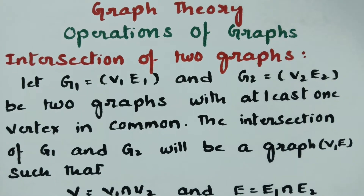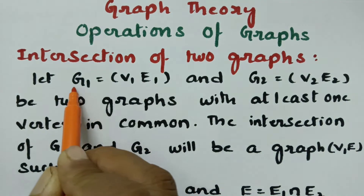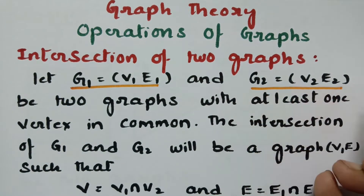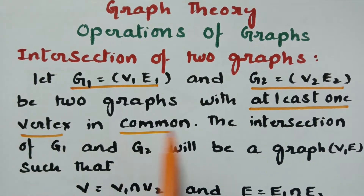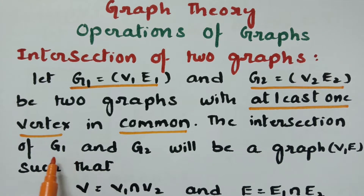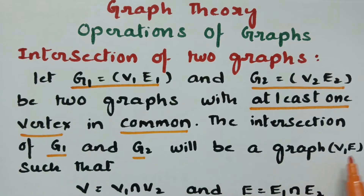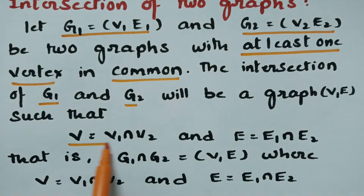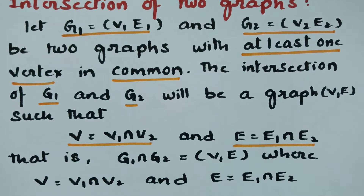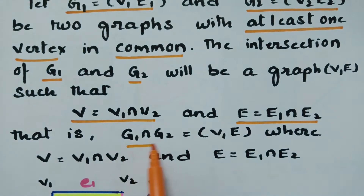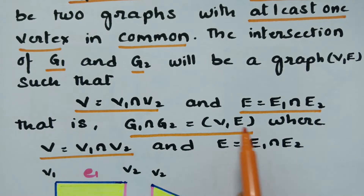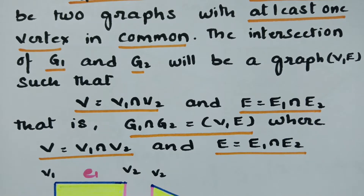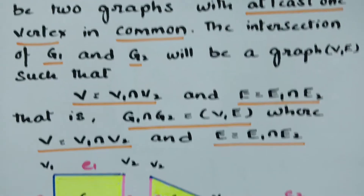Now coming to the intersection of two graphs. Let g1 = (v1, e1) and g2 = (v2, e2) be two graphs with at least one vertex in common. The intersection g1 ∩ g2 is the graph (v, e) such that v = v1 ∩ v2 and e = e1 ∩ e2. At least one edge should be in common among these graphs.